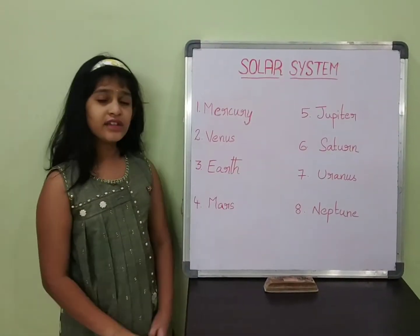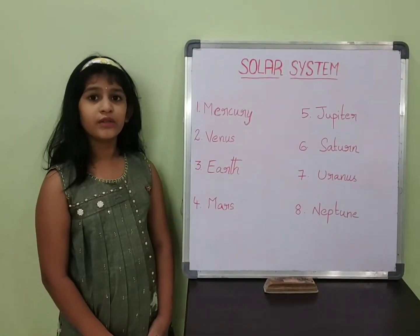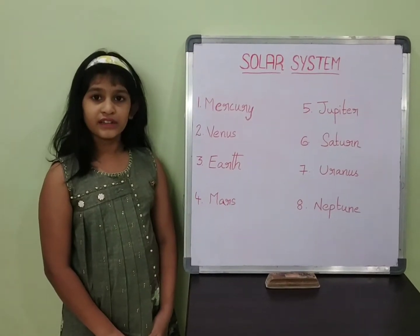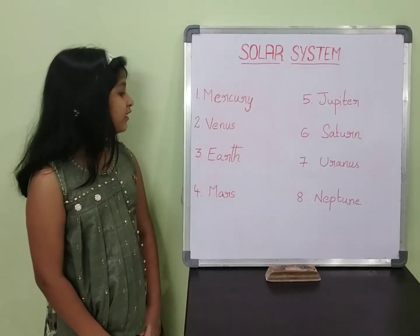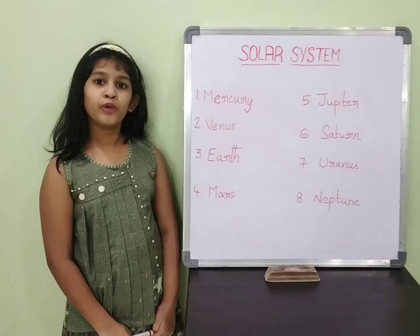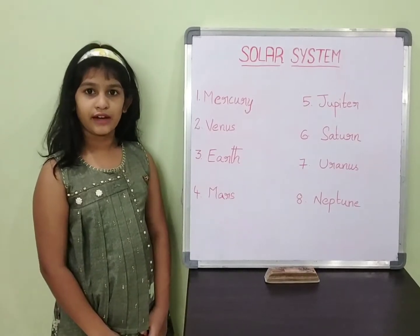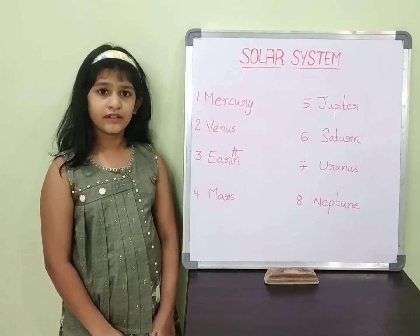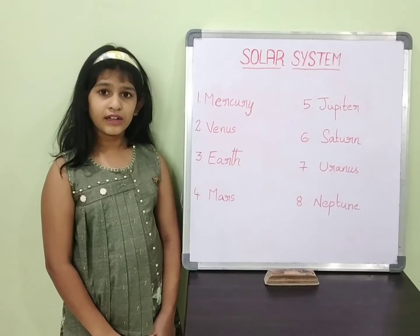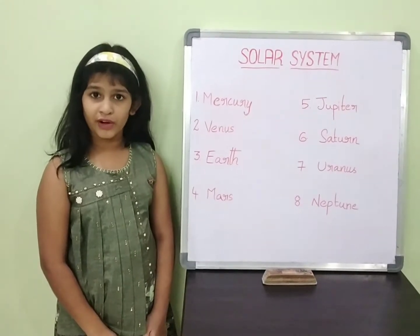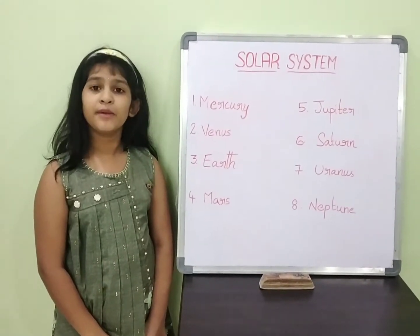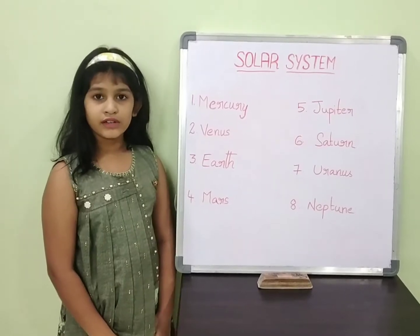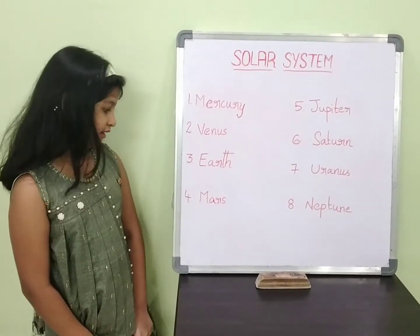Earth is the only known planet where living things are found. Earth gets the right amount of heat and light from the sun. Earth has 71% of water bodies and 29% of land. This is why the Earth is called a living planet.